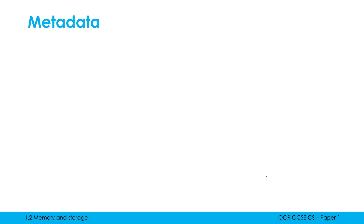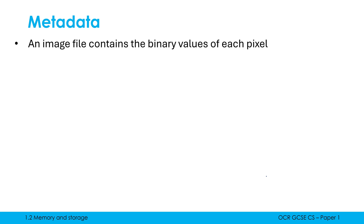The last term in this video is metadata. Metadata is relevant to all files, but we mostly focus on it in the context of images. An image file contains the binary values of each pixel — how many there are is determined by the resolution, and each pixel's color is determined by the color depth. That is the raw image data, but we cannot store those values alone — we also need to include metadata.